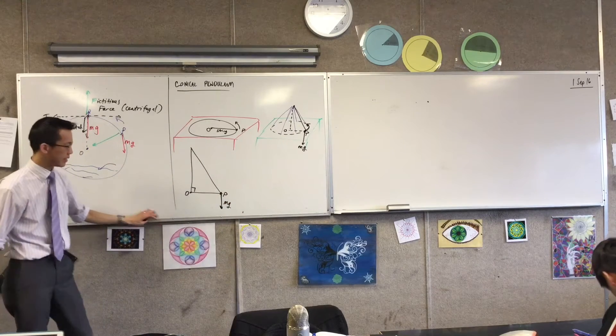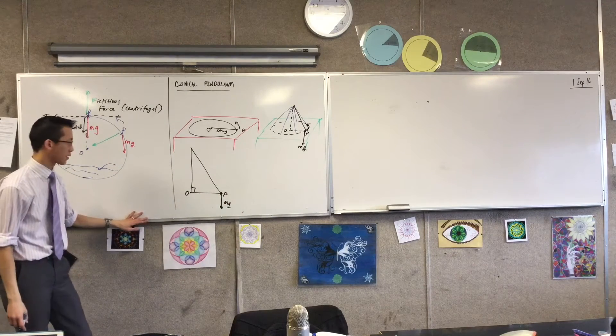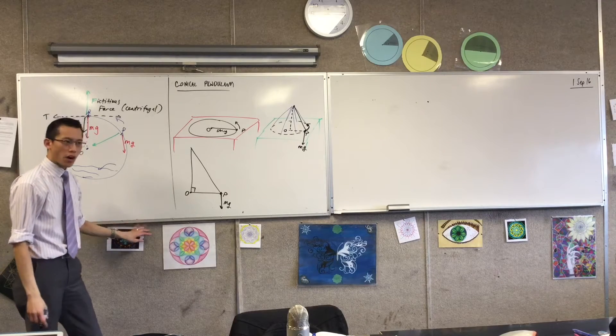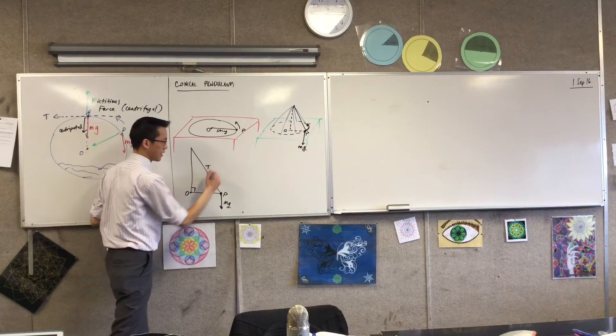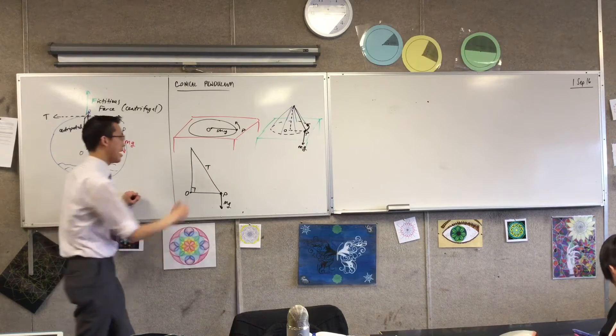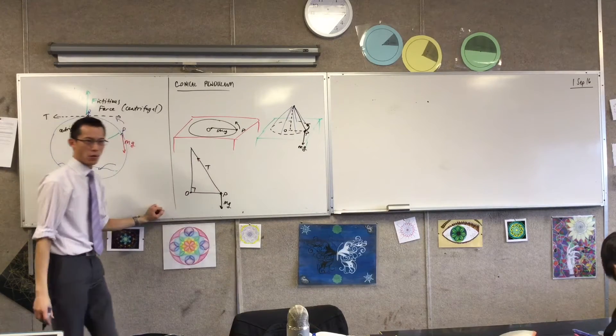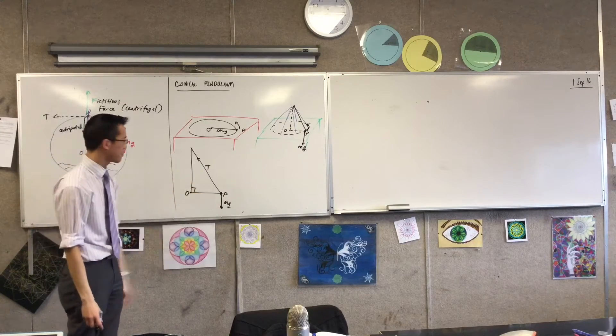We know we've got mg heading downwards like this. Sorry, I should draw it longer, but I've run out of space. You've got the thing holding it into the motion is the tension of this string. So I'm going to call that T for tension. And it's pulling toward where you're holding the string. This weight is going away.